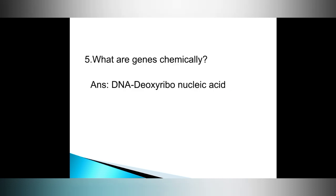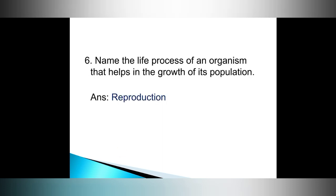Question number five: what are genes chemically? Answer: DNA — deoxyribonucleic acid. Question number six: name the life process of an organism that helps in the growth of its population. Answer: reproduction.